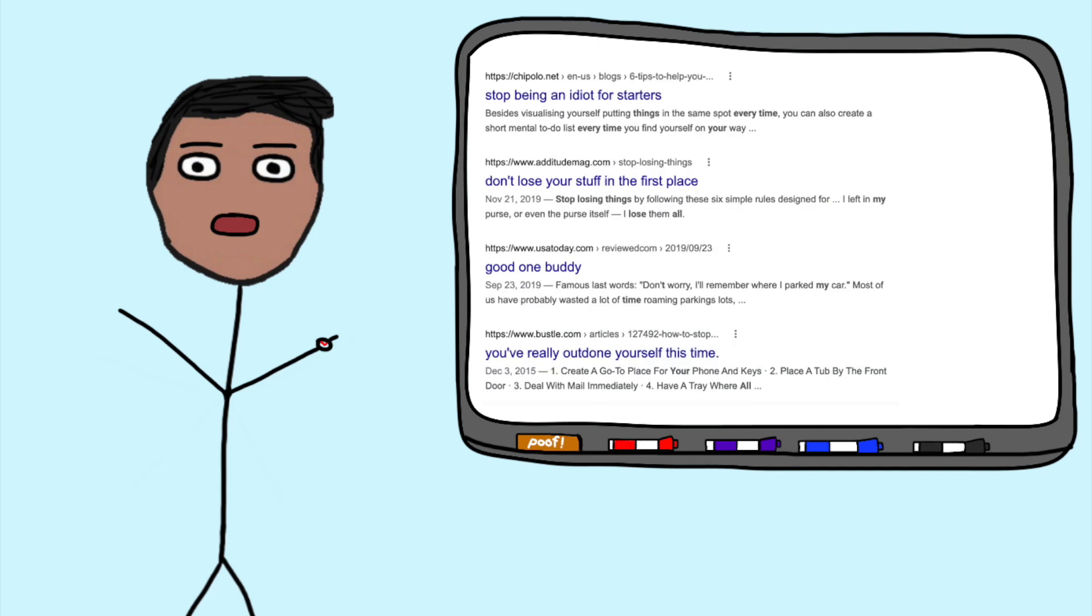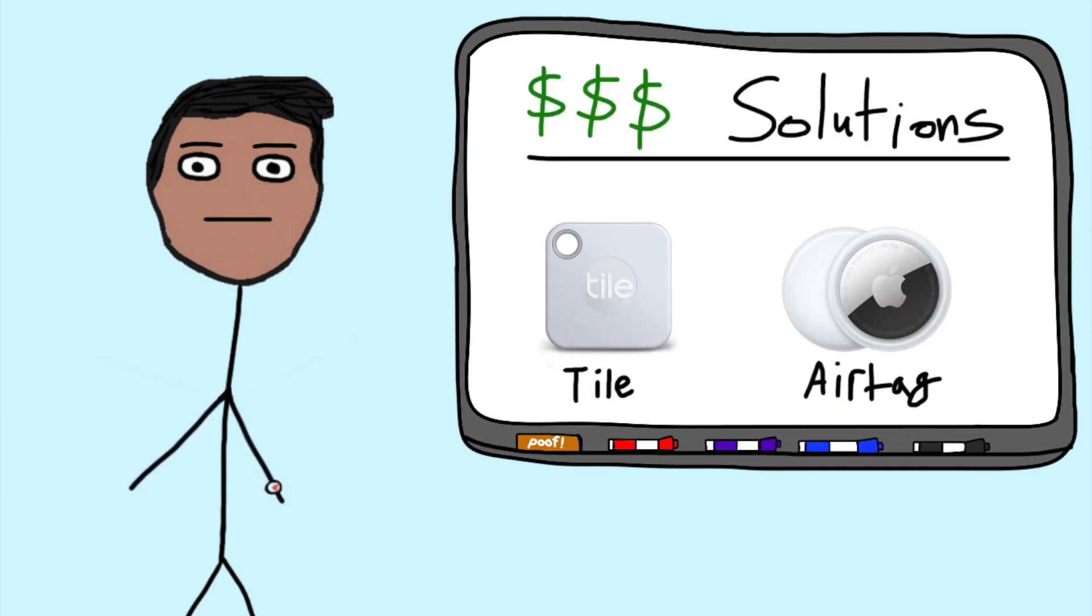Most of the sites just told me to be more aware of what I have. Some recommended options like tile and airtags, but those can get expensive and you can't use them on everything.